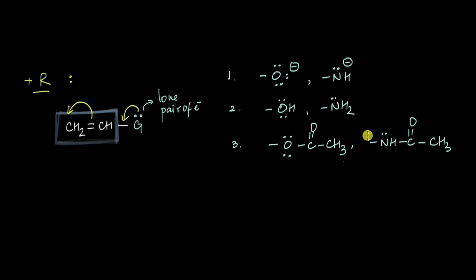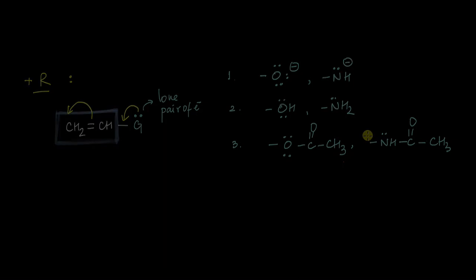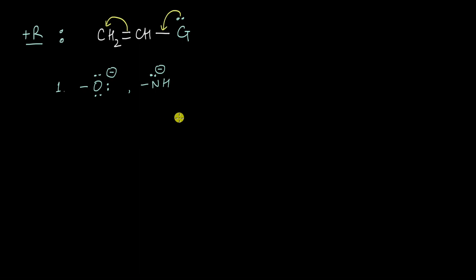The ability of each of these groups to donate electrons is not the same — some of these groups are better at donating electrons compared to others. So how do you figure that out? What I have here are two plus-R groups: O⁻ and NH⁻, and as you can see they have a lone pair which they can donate to a pi system, thereby making them plus-R.